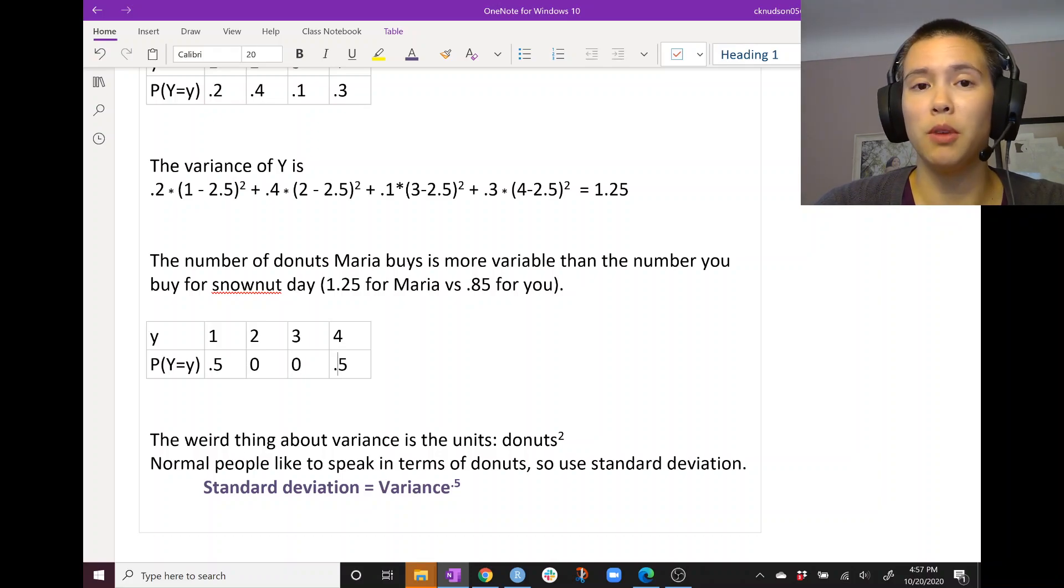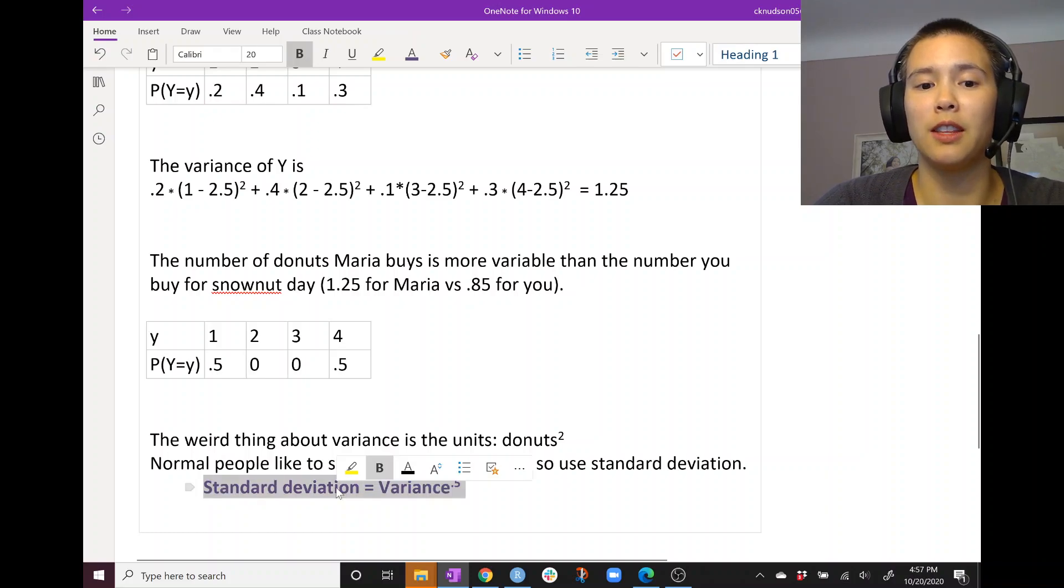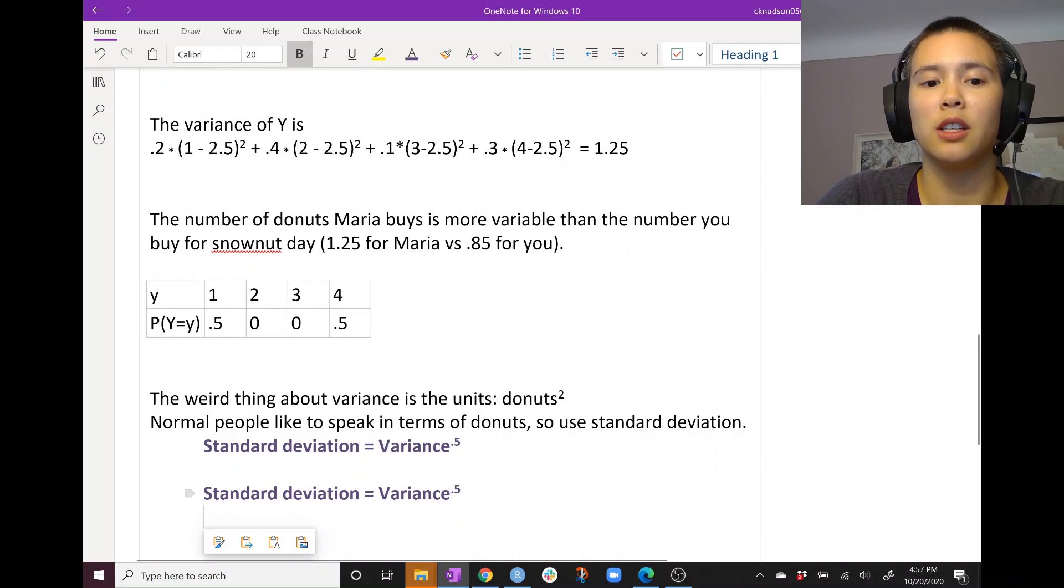And that's convenient because all we have to do is take the square root of variance to get standard deviation. So standard deviation equals the square root of variance. Another way that we can write this is standard deviation squared equals variance.